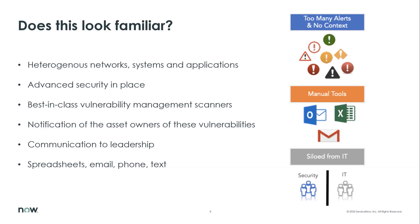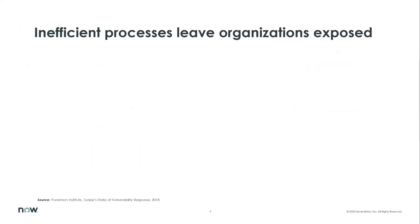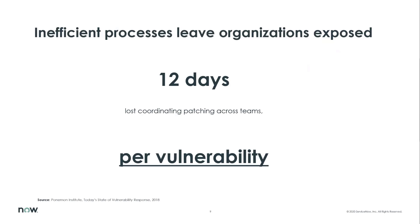We need to take action. Typically what I'm seeing is that organizations are using email, spreadsheets, cell phone calls, and text messages to relay what vulnerabilities exist. And they have to wait on these to come back. What we're seeing is that there's a gap and a delay, and this gap and delay is causing, per vulnerability, upwards of 12 days on average.